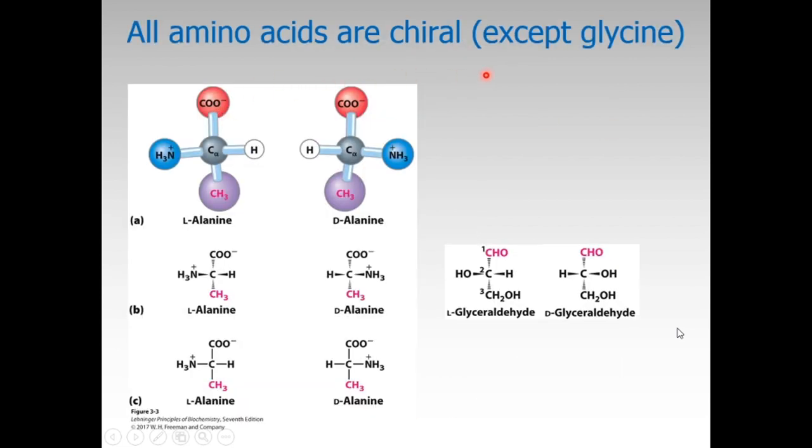All amino acids are chiral except glycine. Glycine is an amino acid where the R group is H, so it doesn't have a chiral center—it is achiral.